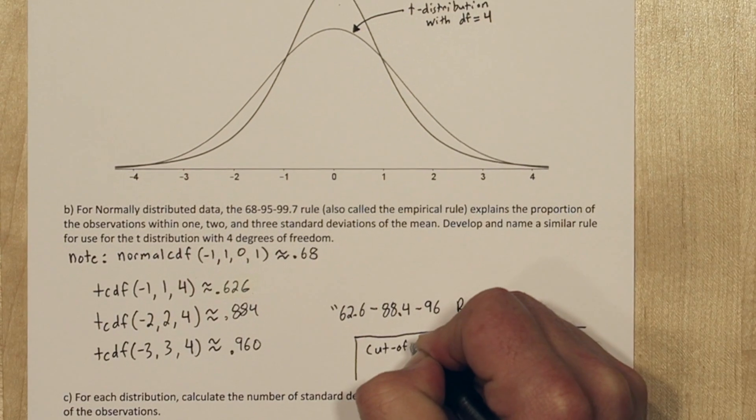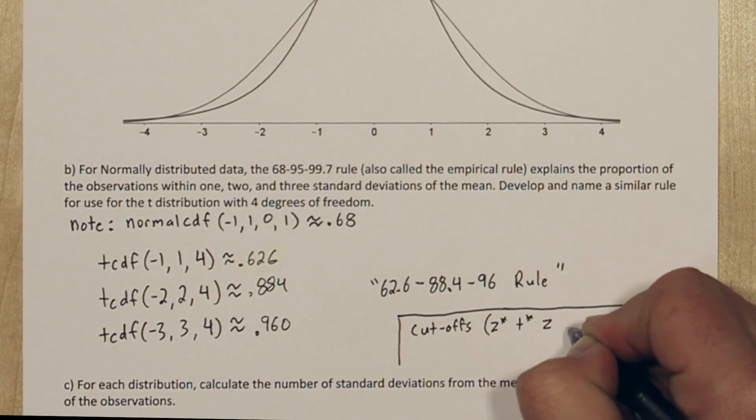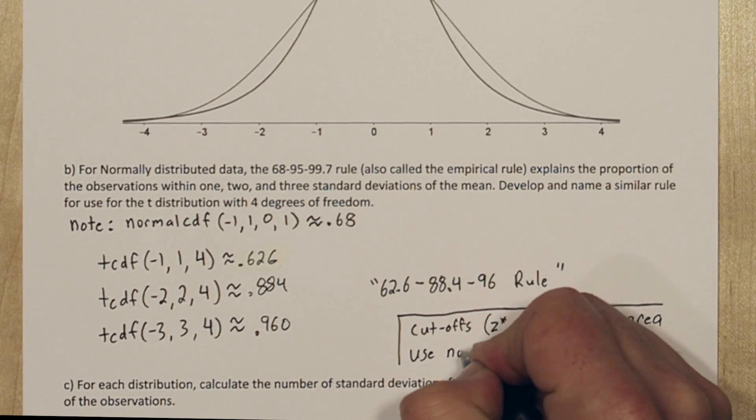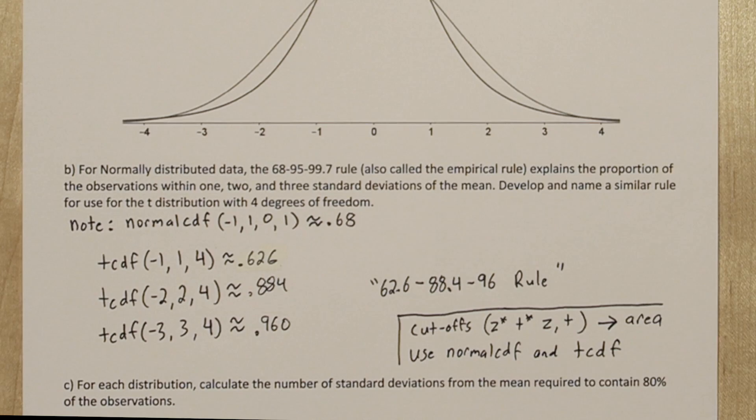One final note, when you're going from cutoffs, the critical values, and trying to calculate an area, we're going to use normcdf and tcdf. They're the cumulative density functions on the calculator.